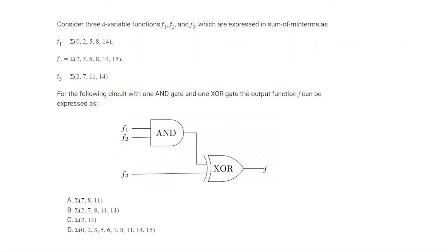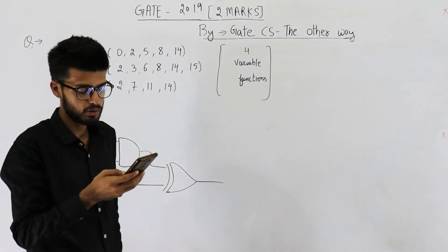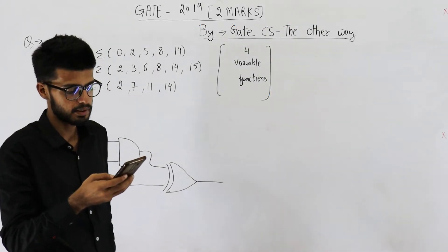The statement says, consider three four variable functions f1, f2 and f3 which are expressed in sum of minterms. Have a look at these three functions. For the following circuit with one AND gate and one XOR gate the output function f can be expressed as. They have given you four options as well as a diagram of the circuit.